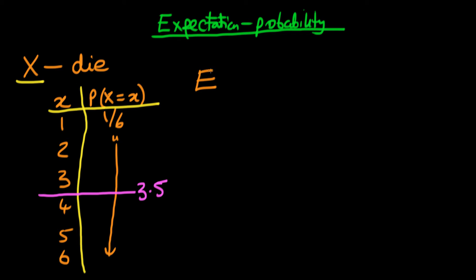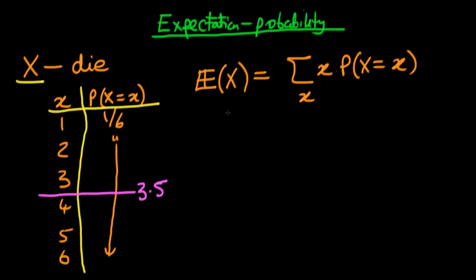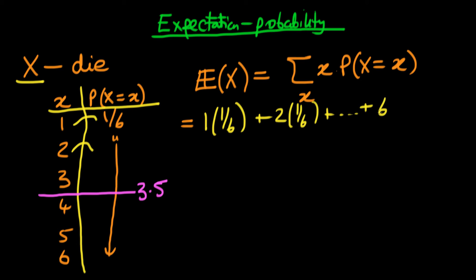The answer is we use the rule for finding the expectation of a discrete random variable. The expectation is defined as the sum over all values the random variable can take of each value times the probability of that value occurring. For a fair die, that's 1×(1/6) + 2×(1/6) + ... + 6×(1/6), which gives 21/6 = 3.5. So we've proved mathematically that the expectation of a fair die is three and a half.